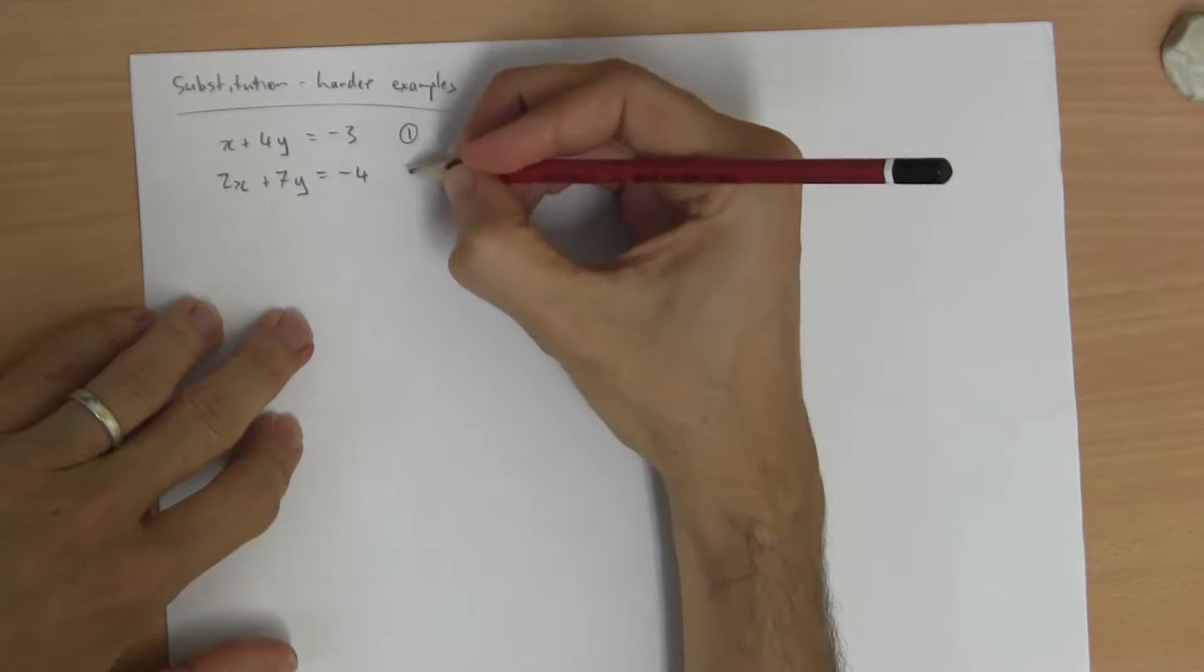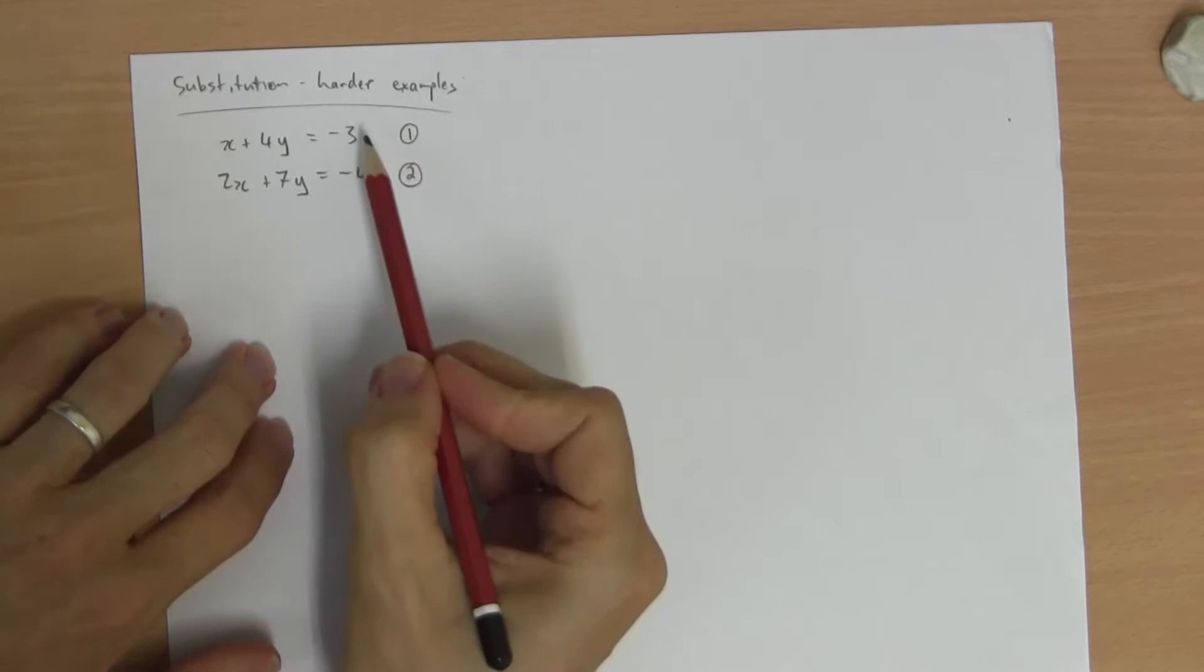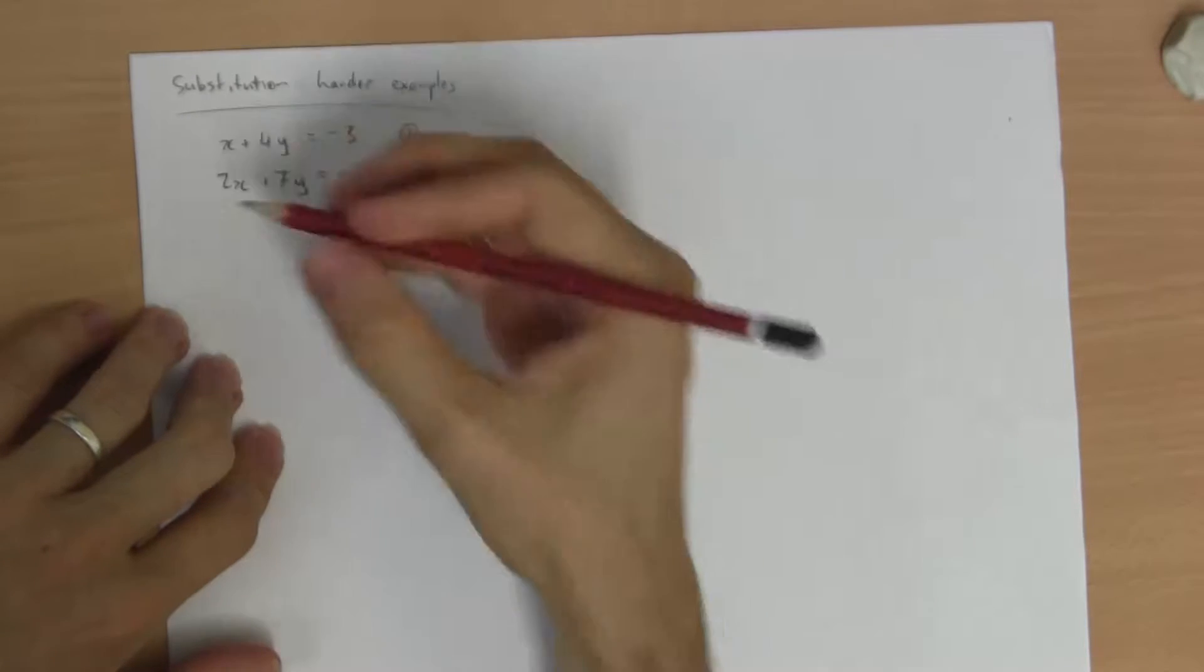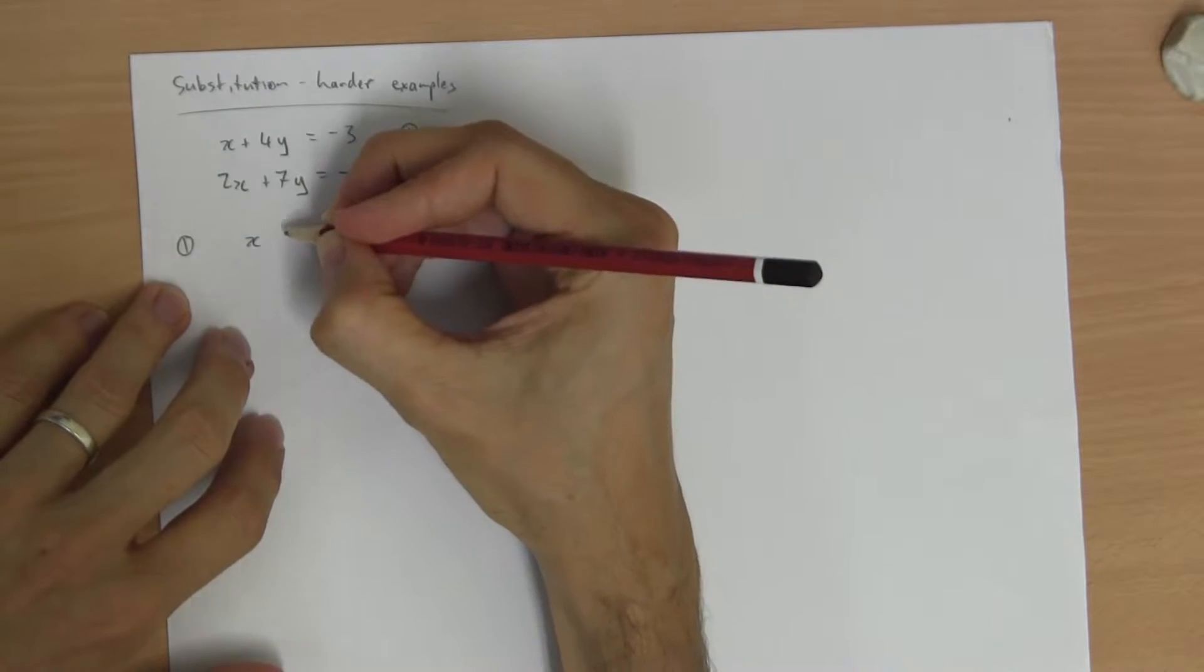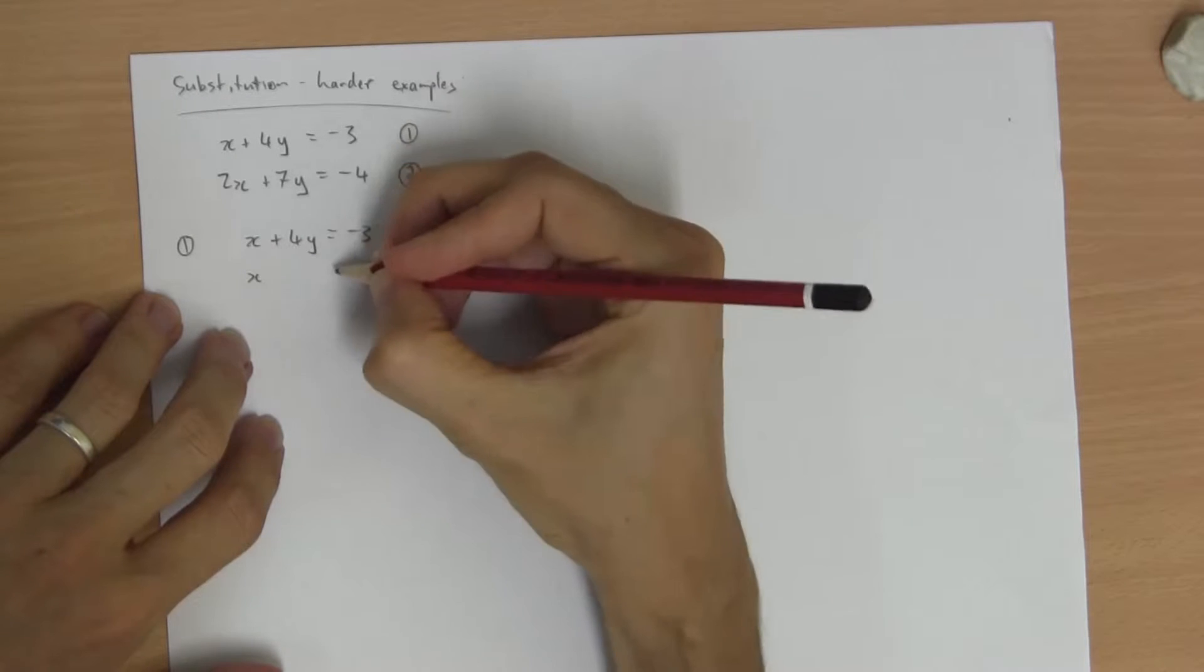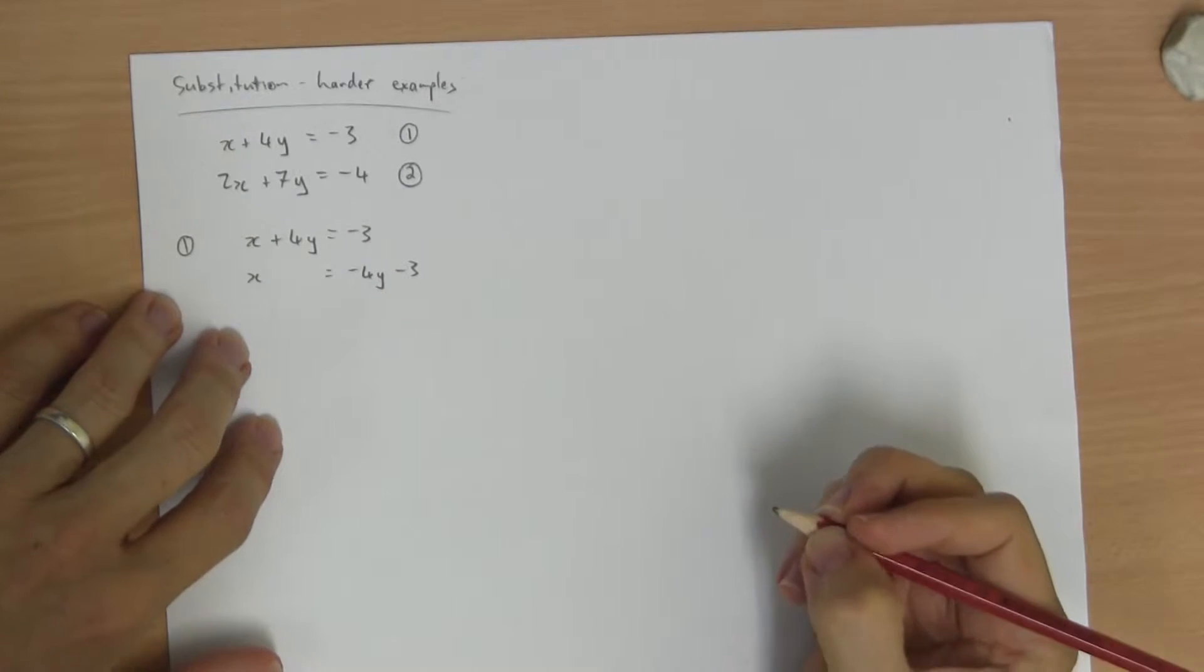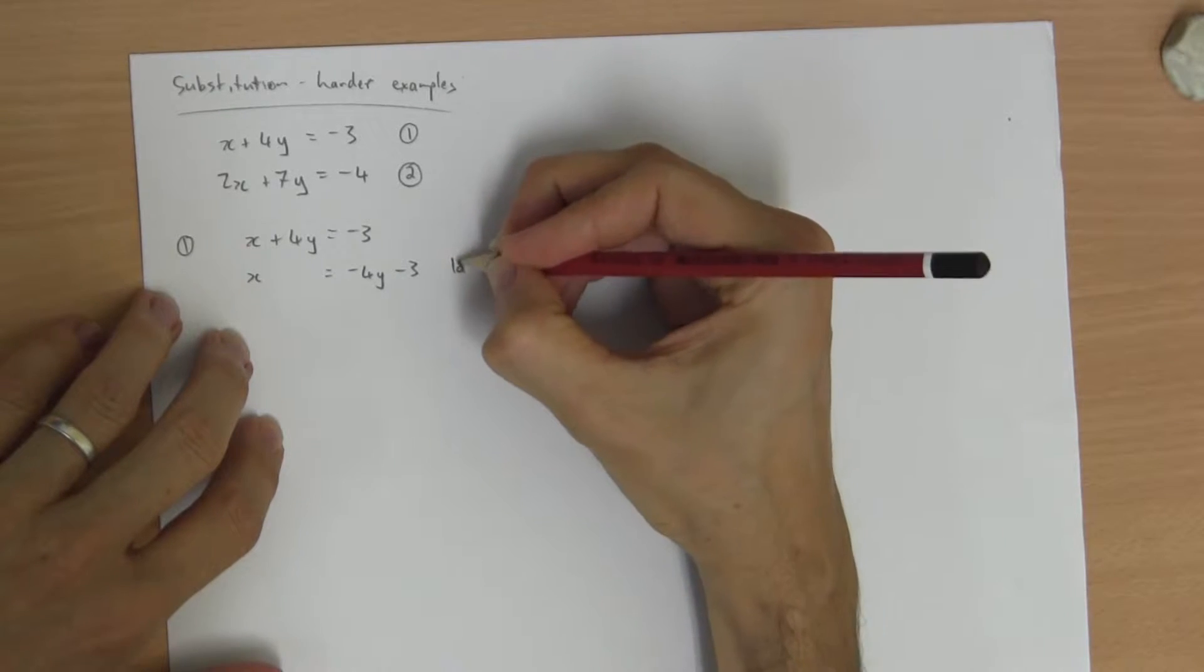Let me start by labeling my equations. I'm going to rearrange number 1 so it says x equals, because it's actually pretty easy to do. Number 1 rearranges to say x. x plus 4y is negative 3. That means x must be negative 4y minus 3. Now I got this from equation 1 so I'm going to call it 1 only.